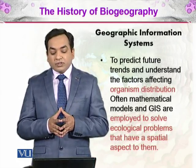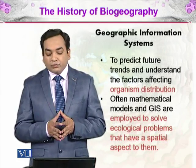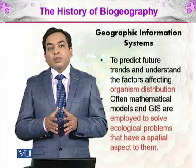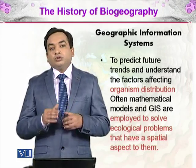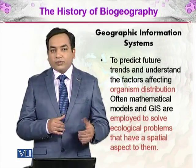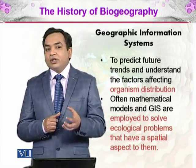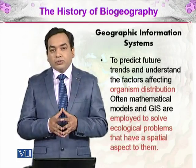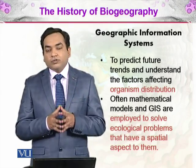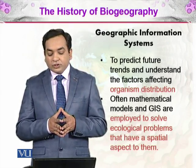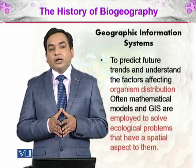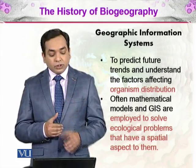There is also a new system called the Geographic Information System (GIS) to predict future trends and understand factors affecting organism distribution. We combine organismal data with geography — pinpointing where one organism lives and combining that data with geographical information. Mathematical models and GIS are employed to solve ecological problems that have a spatial aspect related to space.